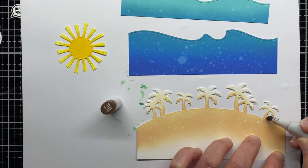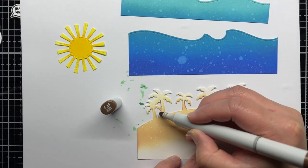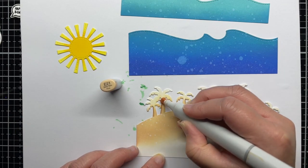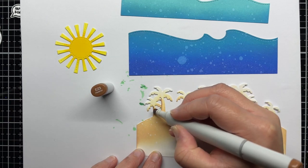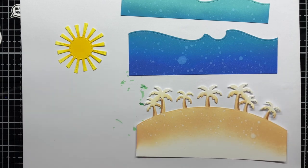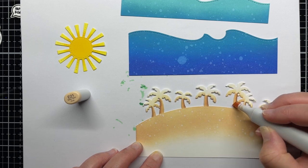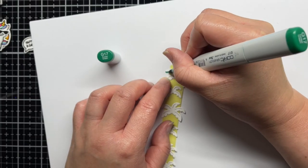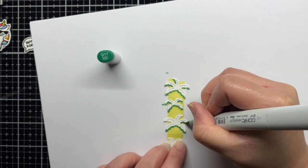Once they were dry, I used the chisel tip of a few Copic markers to add a little shading to the palm tree trunks. My oxide ink was dry, but the oxides can leave a bit of a residue on the markers, so I don't like to use the brush nib over the oxides. Then I color the palm tree leaves with three green Copic markers and use liquid glue to adhere them to the tree trunks.